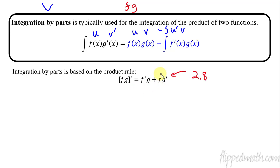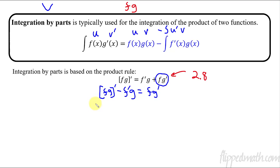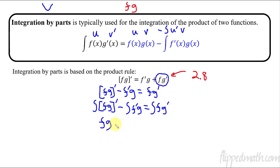So I'm going to take this product rule from 2.8 and solve for f g prime. We subtract f prime g over, giving us the integral of (f g)prime minus f prime g equals f g prime. Then I integrate both sides. The integral of (f g)prime is just f g, so we get f g minus the integral of f prime g equals the integral of f g prime. The integral of f g prime is equal to f g minus the integral of f prime g. That's what this is.